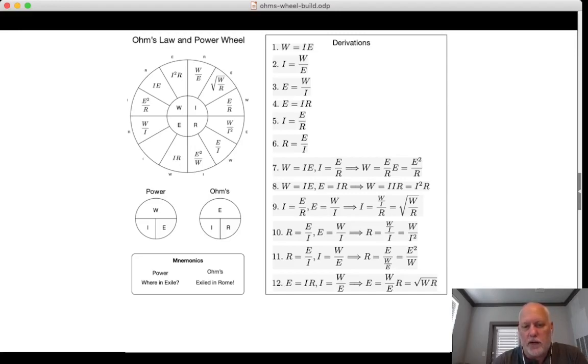We're going to substitute in W over E for I. So we have W over E times R. E is equal to W over E times R. And we do, we multiply both sides by E. We get E squared is equal to the product of W and R. We take the square root of both sides and we get the square root of WR. And that gives us the last, the final equation for our power wheel.